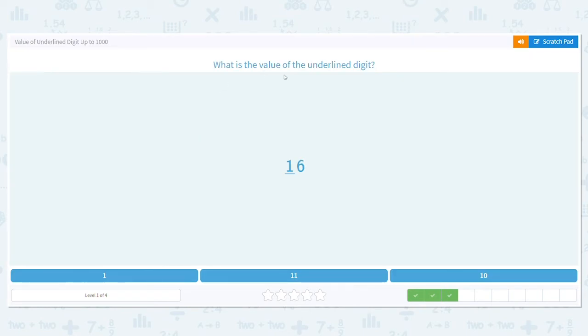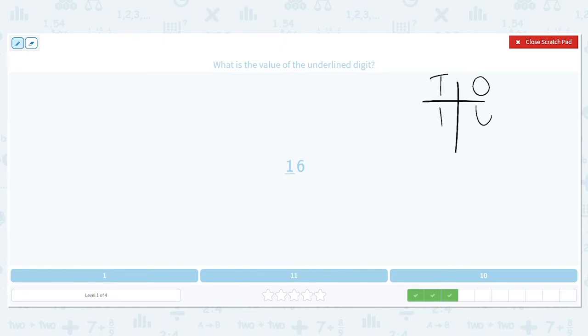How about the value of the underlined digit here? 16. We have 16. I'm going to set up my chart a little bit differently right now because we're really working with tens and ones. We have 16. Are we looking at the ones place? No, we're looking at the tens.